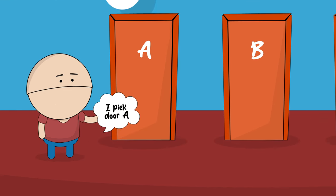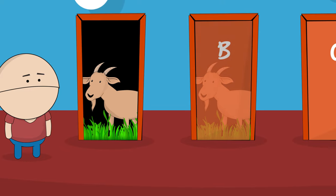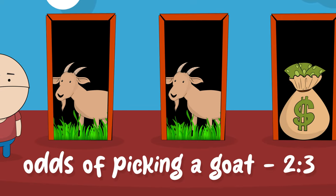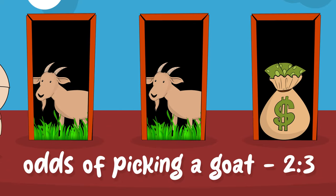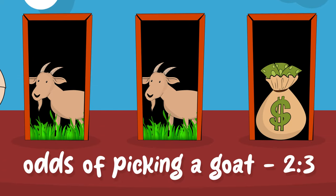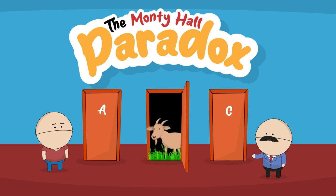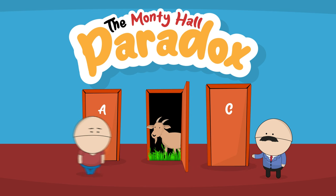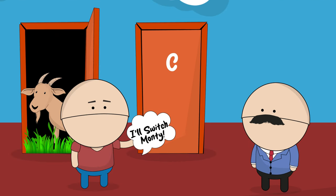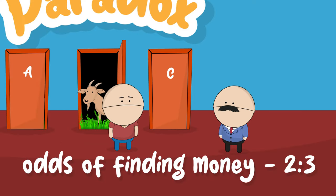At the start of the game, it doesn't matter what door you pick. You have a greater chance of picking a goat. Because you are statistically more likely to have picked one of the goats, and Monty will always reveal one of the goats, means that the odds of finding the money consolidate behind door C.